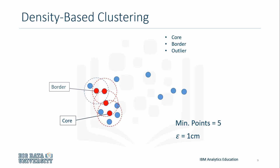A border point has less than minimum points within its epsilon neighborhood, but can be reached by the cluster — that is, it's in the neighborhood of a core point. An outlier, or noise point, is a point that cannot be reached by a cluster.